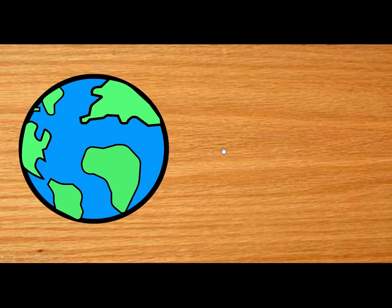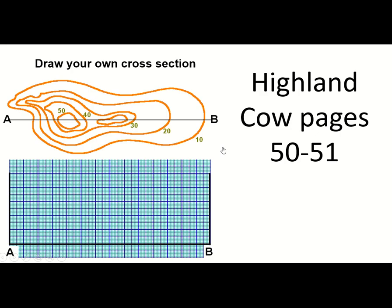Cross-sections explained — a good geographical skill. If you're struggling, the highland cow textbook pages 50–51 has an activity, and I can provide graph paper too. There are probably YouTube tutorials on drawing OS map contours on graph paper as well. That is me done for this session — the fourth lesson of rivers completed. Thank you very much for listening and I will see you next time.